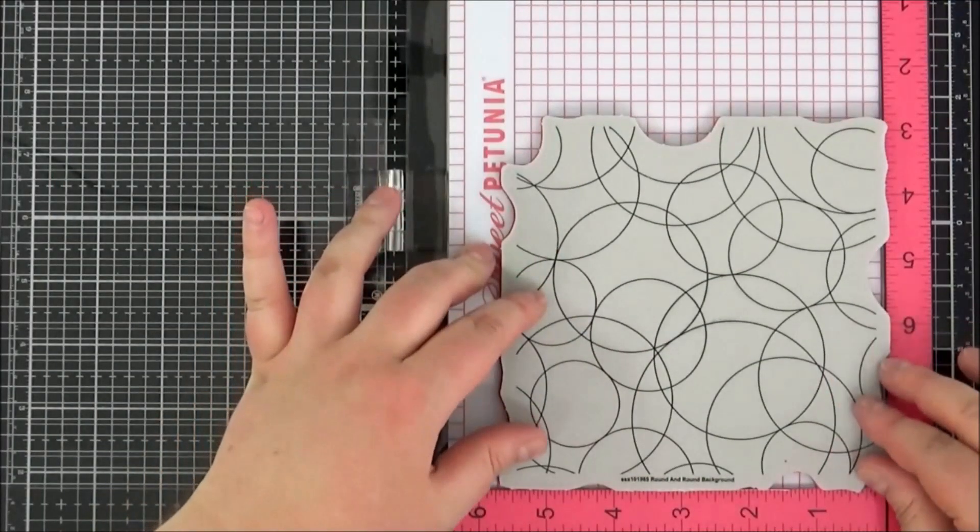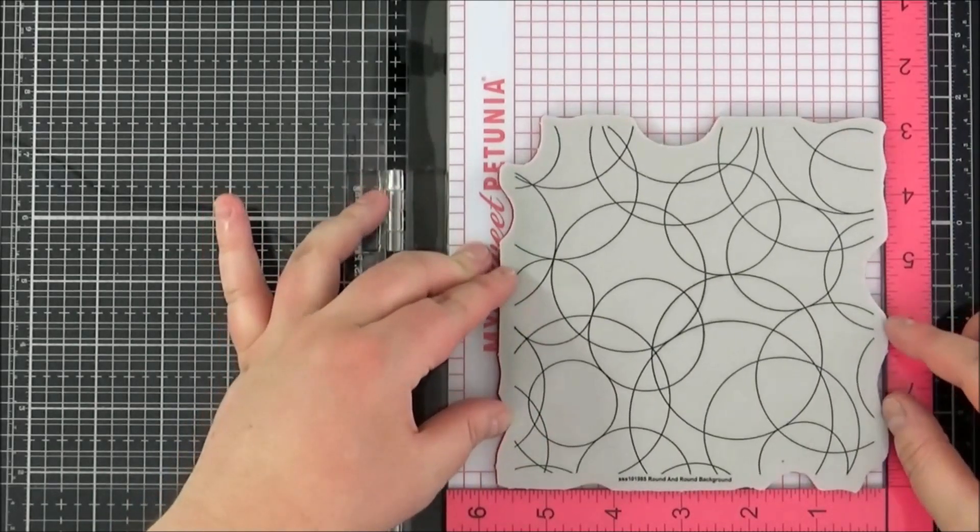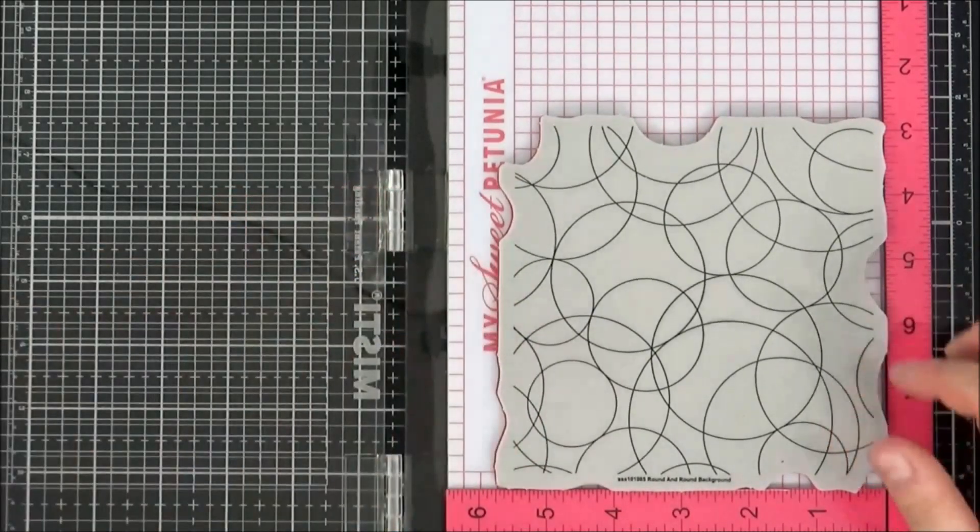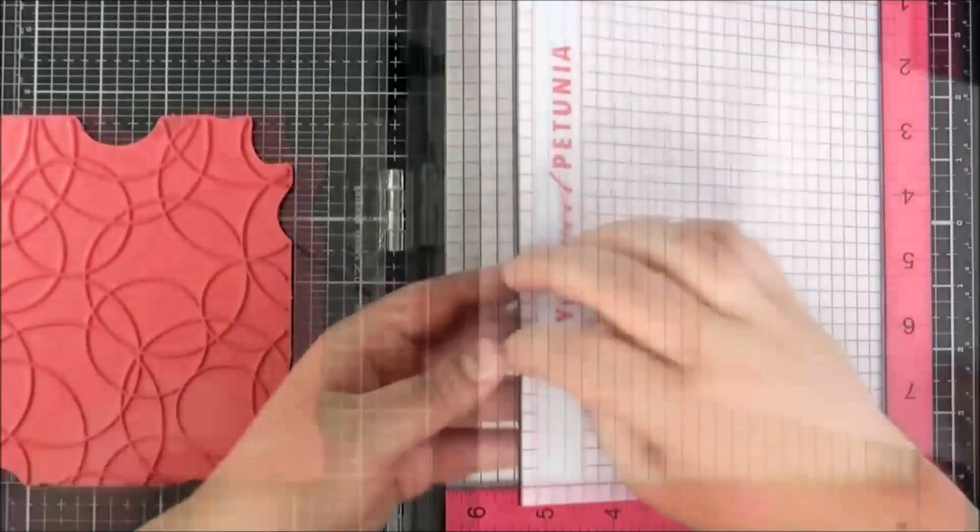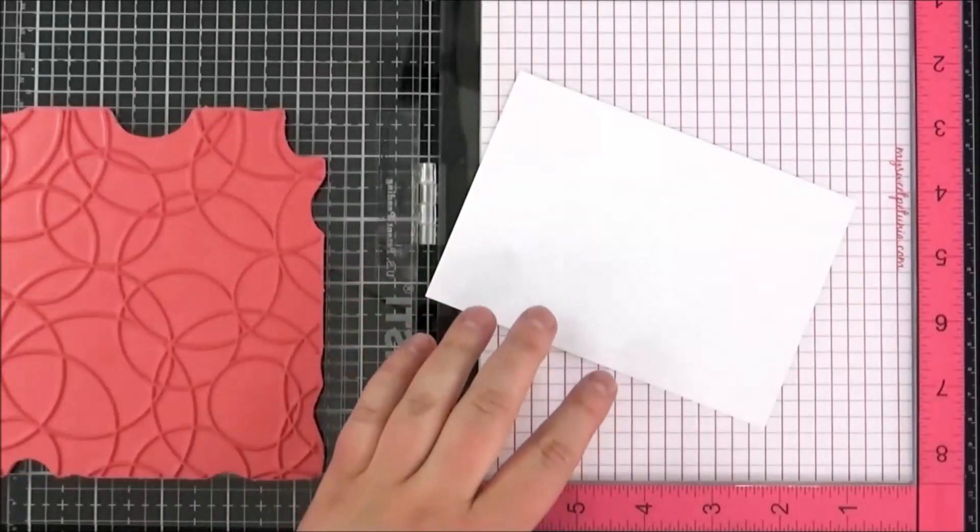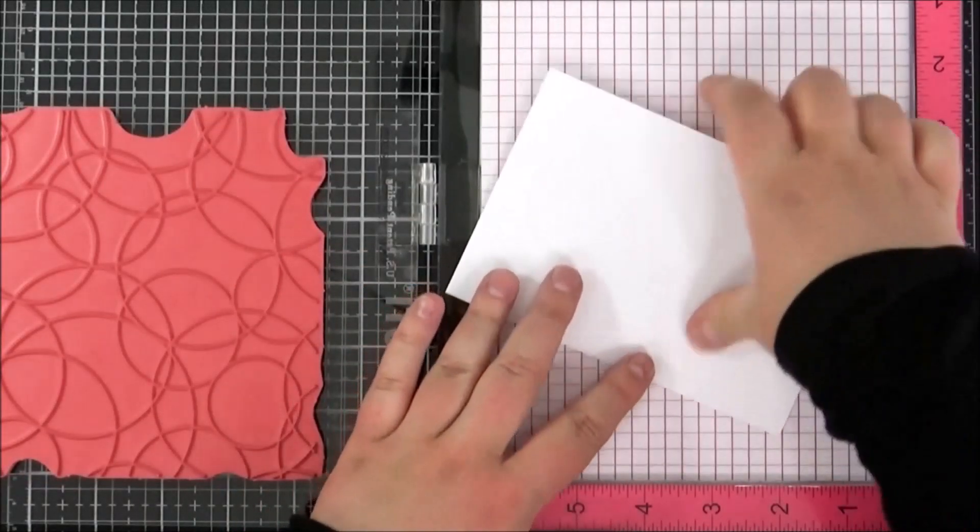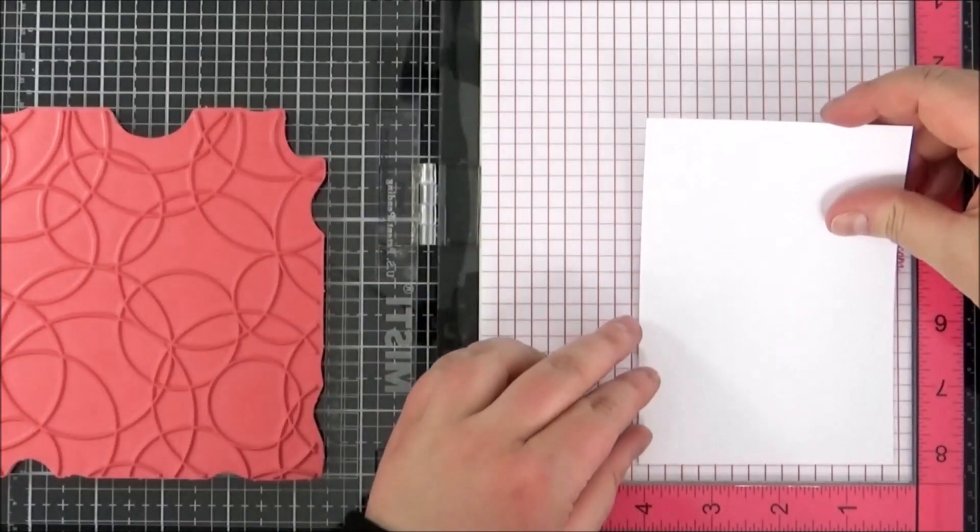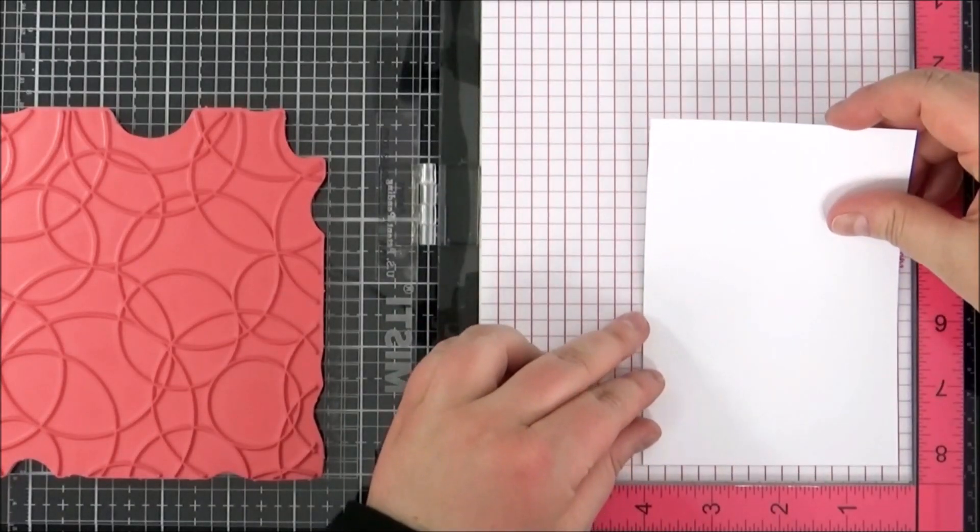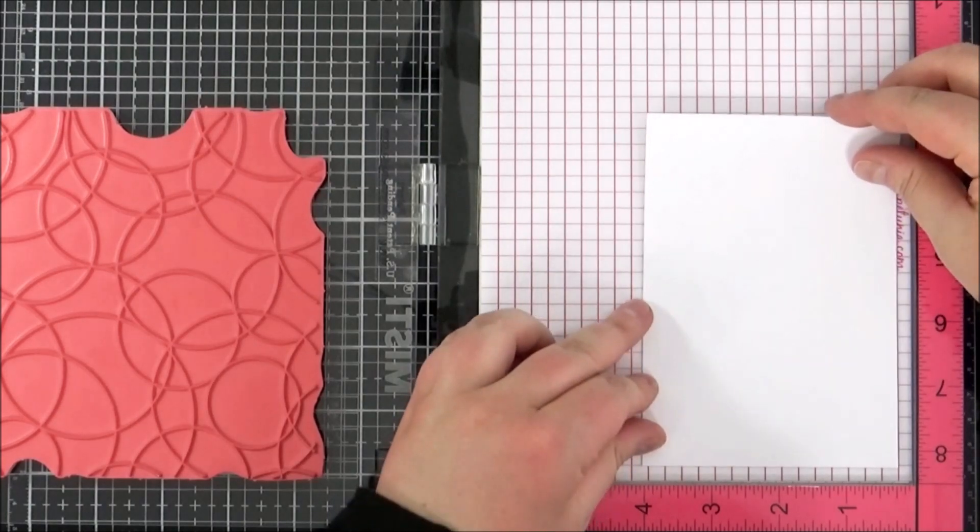Next I'm going to work on my background. This is the Simon Says Stamp Round and Round background stamp from their new Rest and Refresh release. I'm placing it in my MISTI here and I've got a piece of white cardstock, three and six-eighths inches across and five and a half tall.